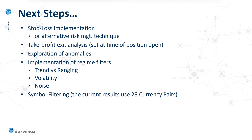The next consideration is symbol filtering. Different assets behave in different ways and have different market dynamics — some assets will be well suited to a particular type of strategy, but not to others. In the work I've done here, I haven't paid any attention to this and have just used 28 currency pairs in all of the backtesting. From experience, only trading assets that are matched to this style of strategy would improve the results substantially.